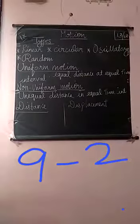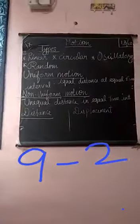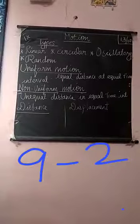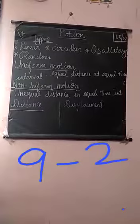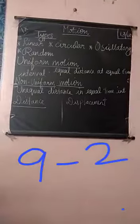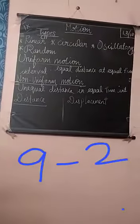Next one is uniform motion. An object is said to be in uniform motion when it covers equal distances in equal time intervals. So, equal distance at equal time. It is said to be uniform motion.